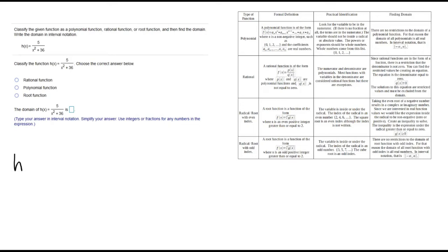So our function is h of x equals 5 over x squared plus 36.